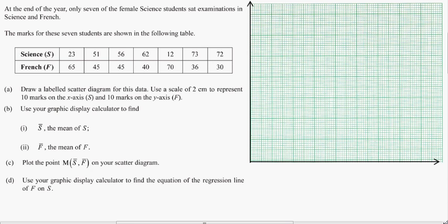In this problem, I'm going to do the second half of a paper two problem that has to do with two variable statistics. This goes over a lot of the different things that you need to know for two variable stats, and it shows you how to use a calculator and things like that. So, pretty good problem. It says, at the end of the year, only seven of the female science students sat examinations in science and French. The marks for these seven students are in the following table. Now the first part of this was a chi-squared problem. I did chi-squared in another video, so you can check that out.